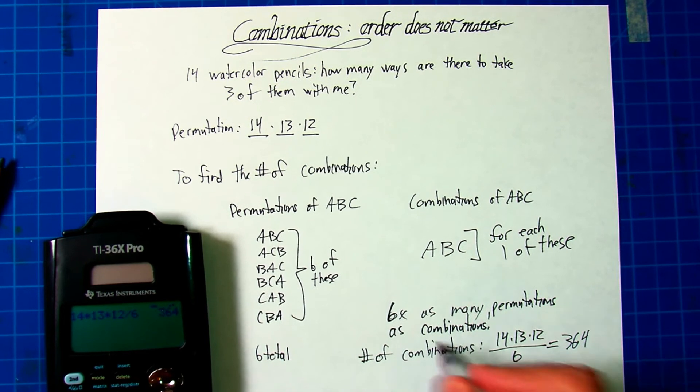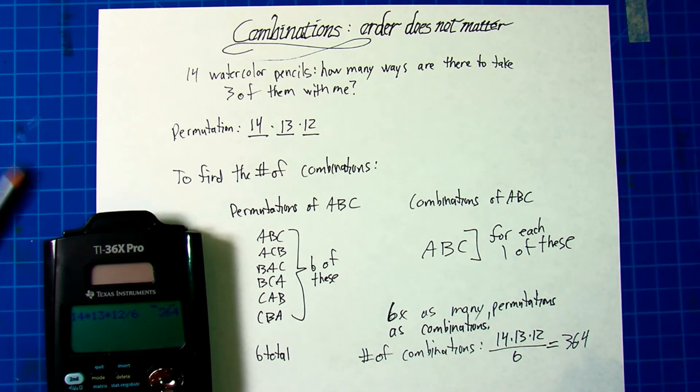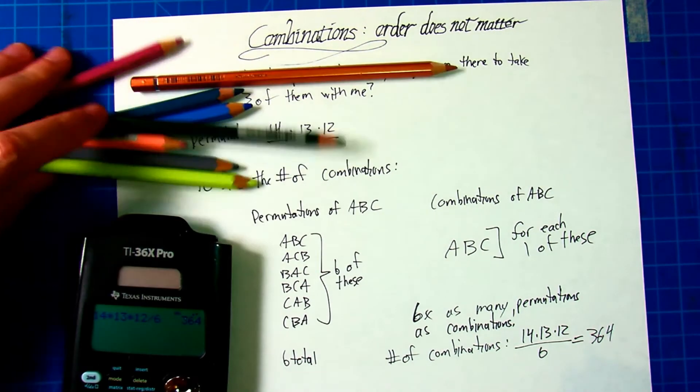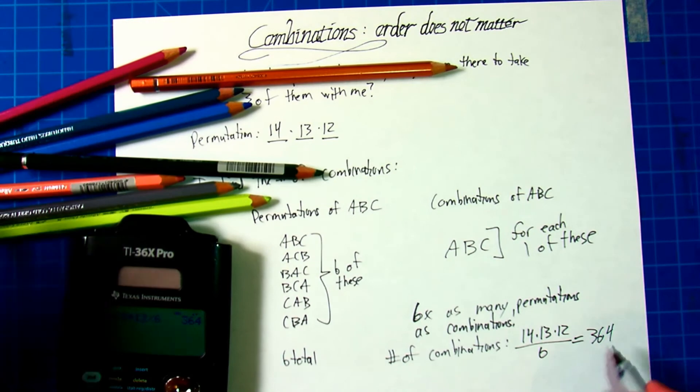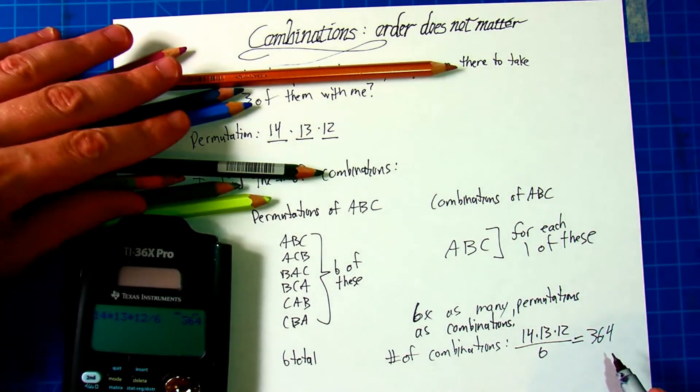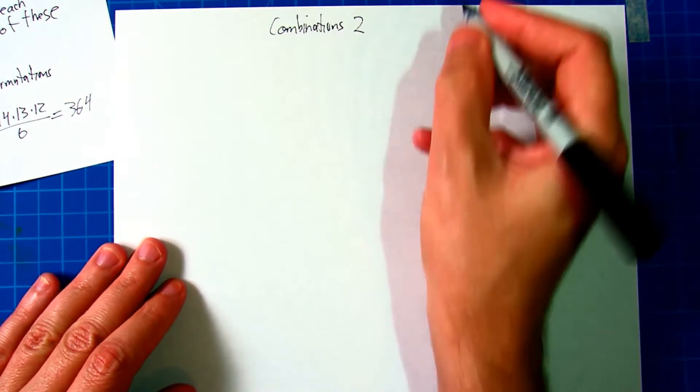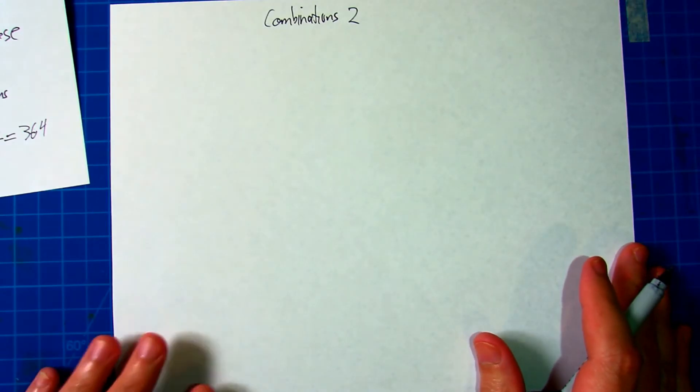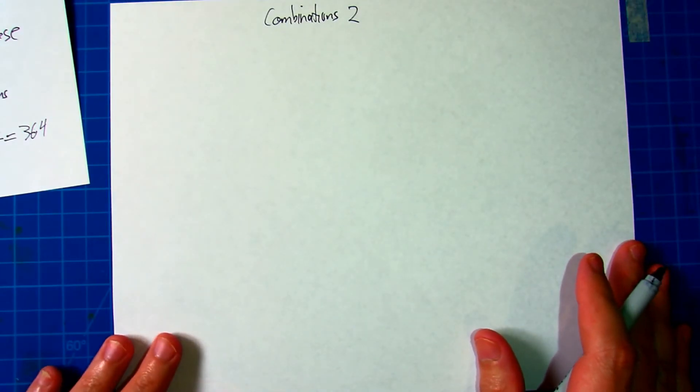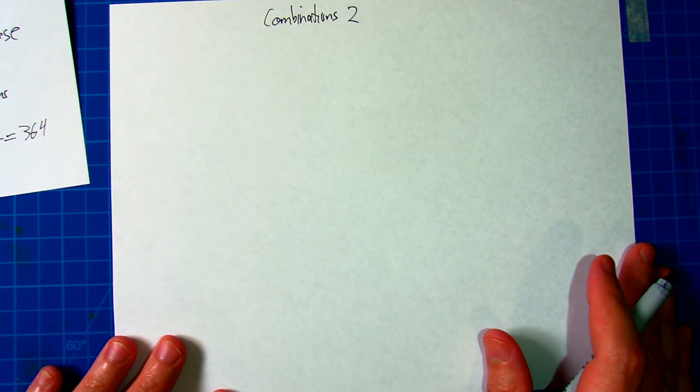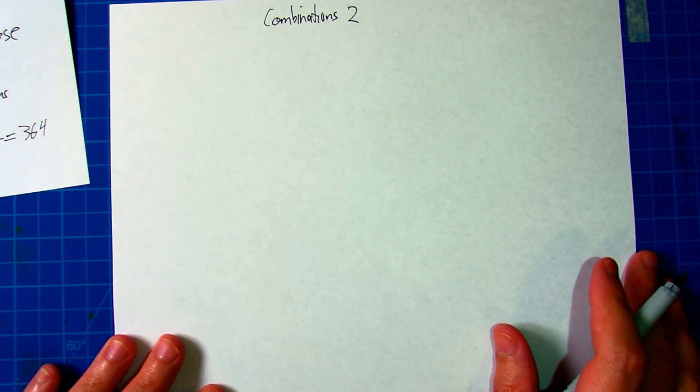364 different combinations of ways I can grab three pencils. So of all of my 14 colors, that means there are 364 ways I can grab any three of them. The number six isn't fixed in stone though. That came about as a result of the fact that we picked three of them. Let's see what happens if I go a little higher.